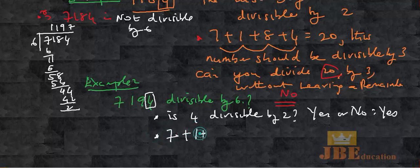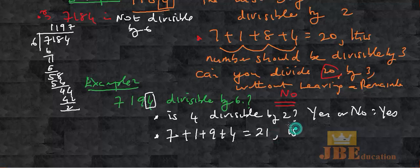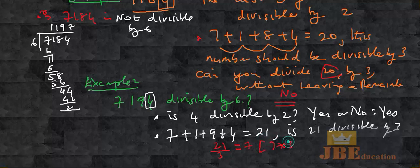Second condition: add all the digits — 7 + 1 + 9 + 4. That gives 8, then 17, then 21. Is 21 divisible by 3? Yes — 21 divided by 3 goes 7 times with no remainder, since 7 × 3 = 21. Second condition is satisfied.